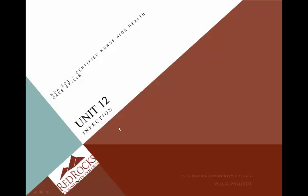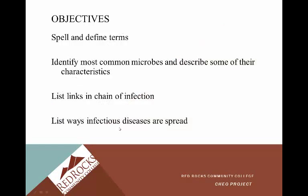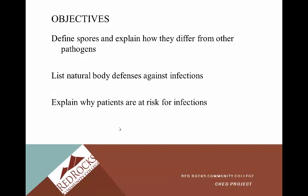Unit 12: Infection. Spell and define terms located at the beginning of this chapter. Identify the most common microbes and describe some of their characteristics. Identify the links in the chain of infection and ways infectious diseases are spread. Define spores and explain how they differ from other pathogens. List natural body defenses against infections.